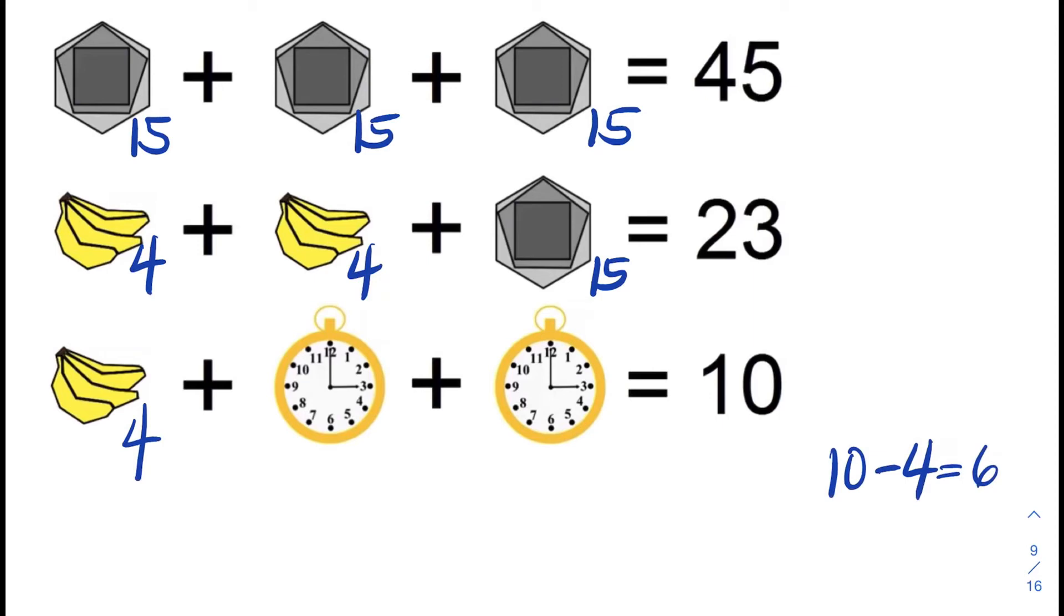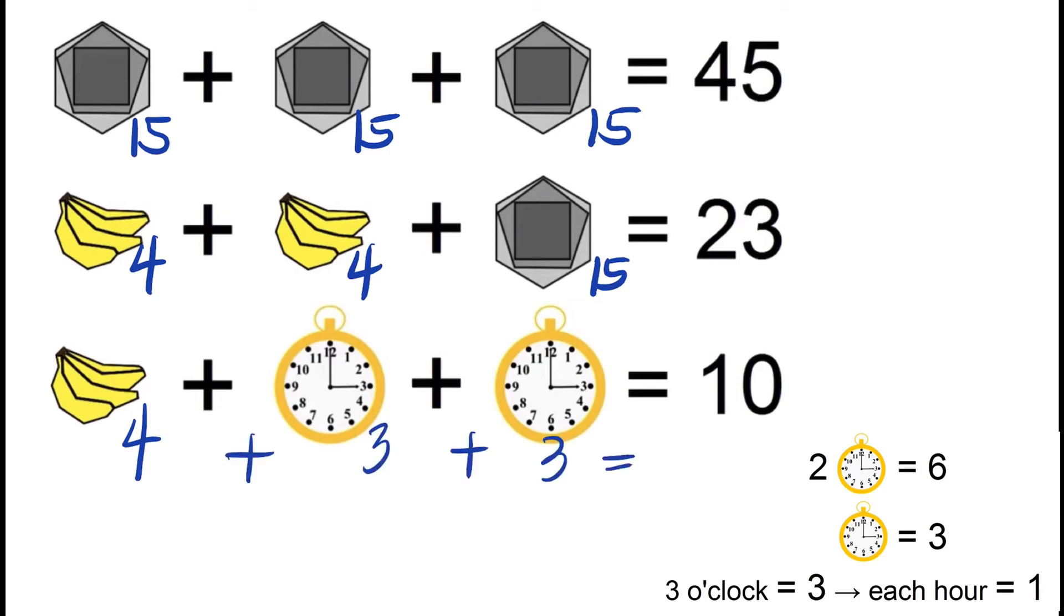And then we can split up 6 between the 2 clocks, which means 6 divided by 2, which is equal to 3. So this means that each clock at 3 o'clock has a value of 3. So we have 4 plus 3 plus 3, and yes, it is equal to 10.